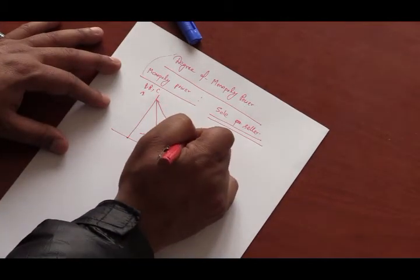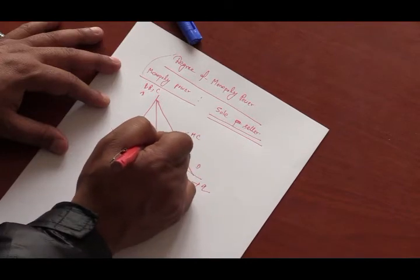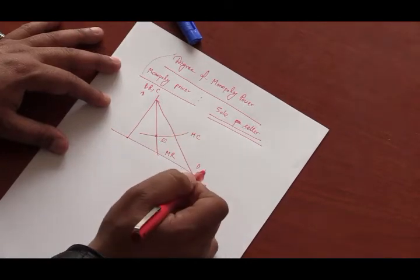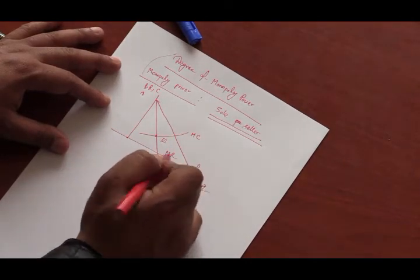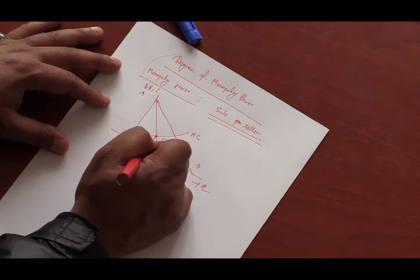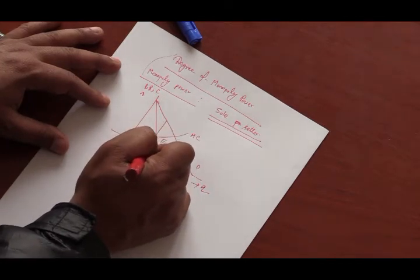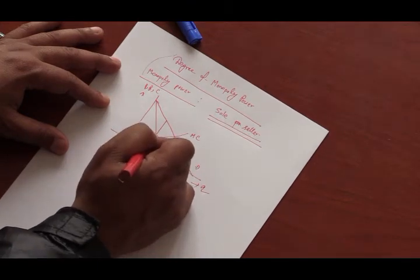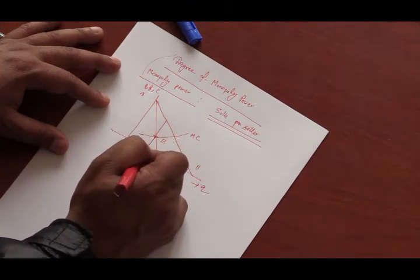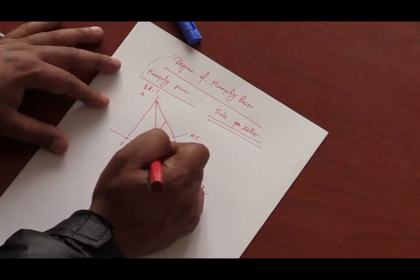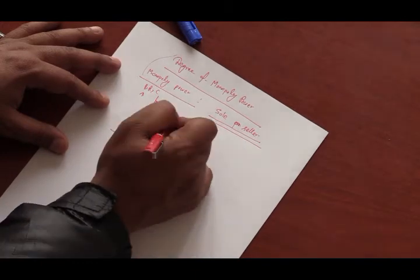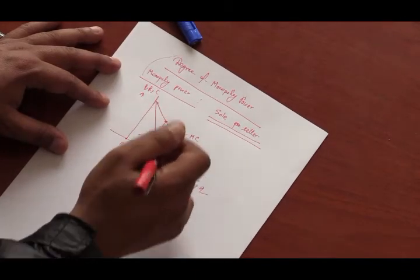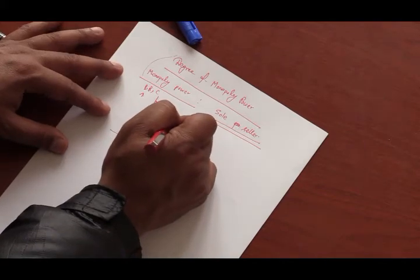So, monopolist equilibrium point is given as E, when marginal cost equals to marginal revenue. So, if this is the output, Q0A is the output. So, at this equilibrium level of output, Q0A is the marginal cost.